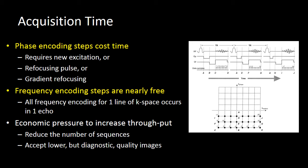In general, we often reduce our acquisition time by reducing the number of sequences we have, by accepting lower quality images, or by new advanced k-space filling techniques. For acquisition time, remember: the phase-encoded direction field of view or resolution costs time. Frequency-encoded resolution or field of view is nearly free because we don't have to generate a new echo — we just have to sample that echo differently.